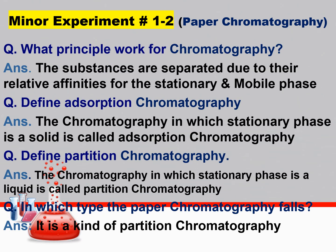Another question: what principle works for chromatography? The substances are separated due to their relative affinities for the stationary and mobile phase. In paper chromatography, one is a stationary phase and the other is a mobile phase. Another question: define adsorption chromatography. Adsorption chromatography is one in which the stationary phase is a solid.